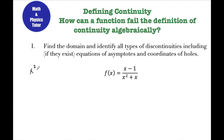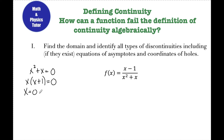I set x²+x equal to zero and solve for x. Pulling out an x, I'm left with x(x+1), giving me x equals 0 and x equals negative 1. These are the two values I need to exclude from the domain.